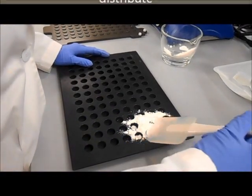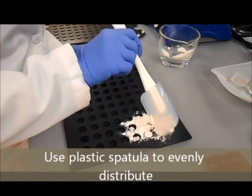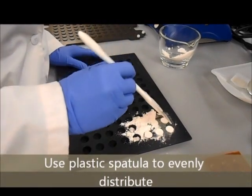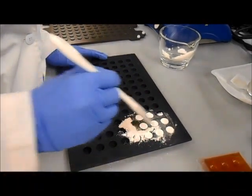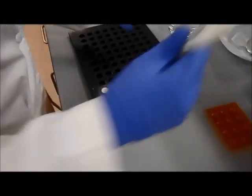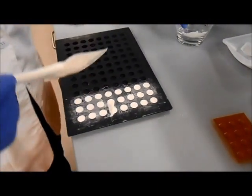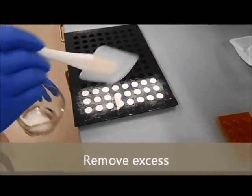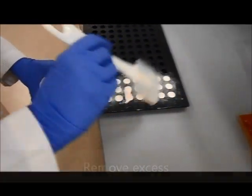Using about half the powder, fill the holes in the mold and then use a plastic spatula to evenly distribute. Remove the excess when all the holes are filled.